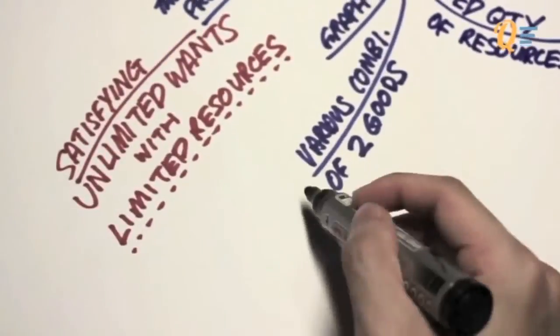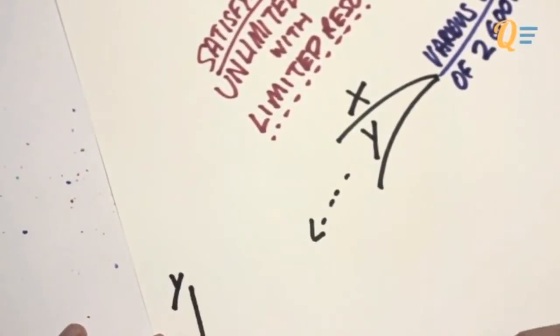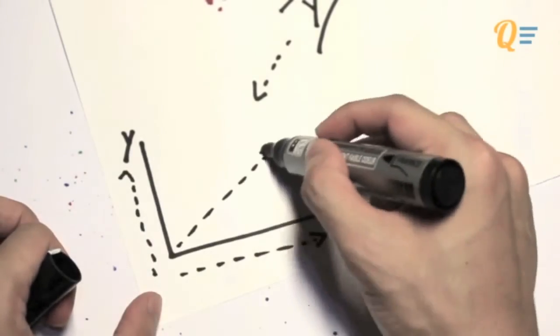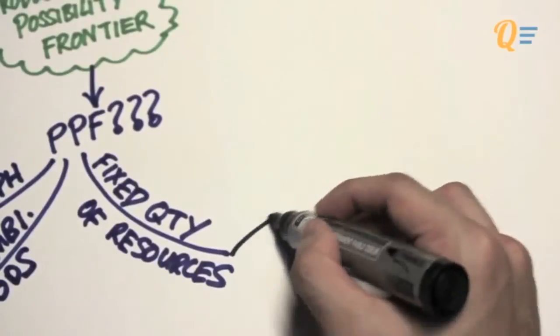We will only be talking about two goods, for example X and Y, because on a piece of paper you can only draw two axes, right? If you go to the right, I'm having more X; going upwards, more Y. Towards the top right hand corner, I will have more of both.